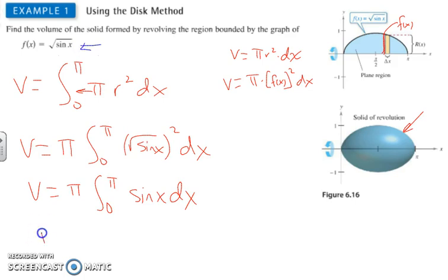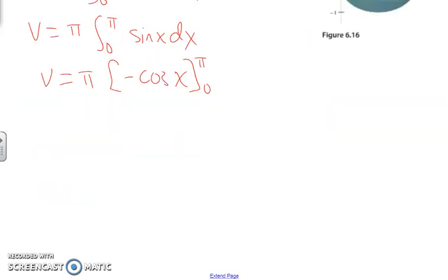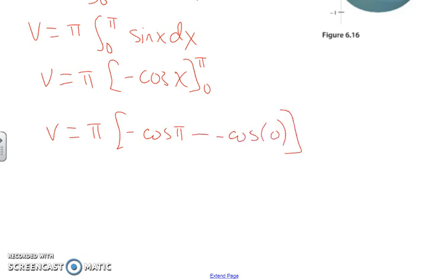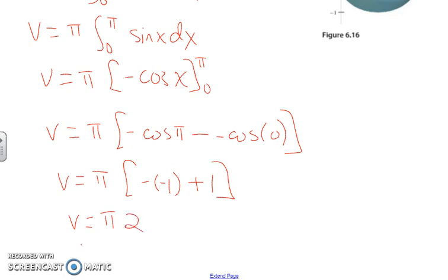Taking the integral, we get volume equal pi times negative cosine of x, evaluated at 0 and pi. Plugging in the values: negative cosine of pi minus negative cosine of 0 gives us negative of negative 1, plus 1. So the volume equals pi times 2, which means the volume equals 2 pi.